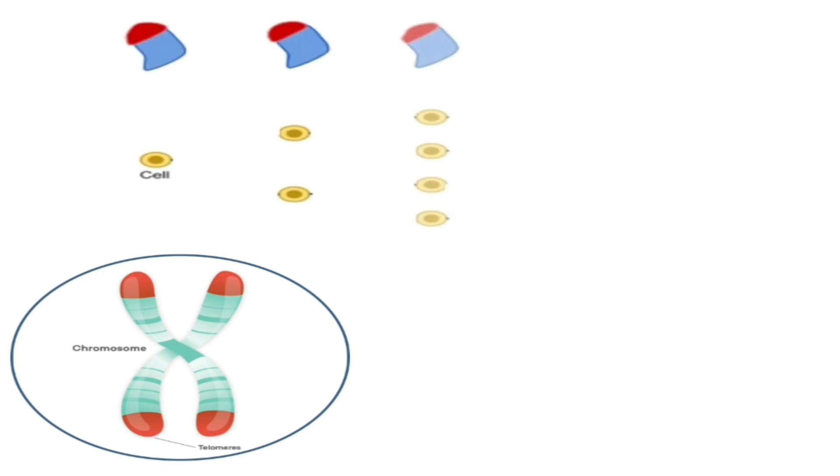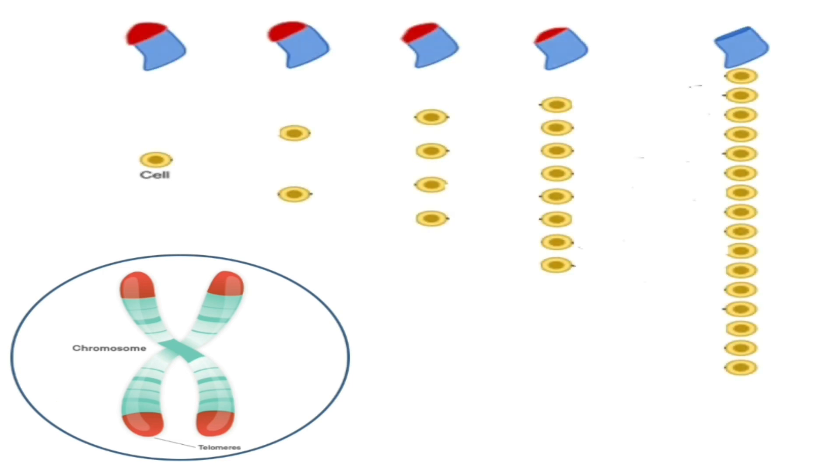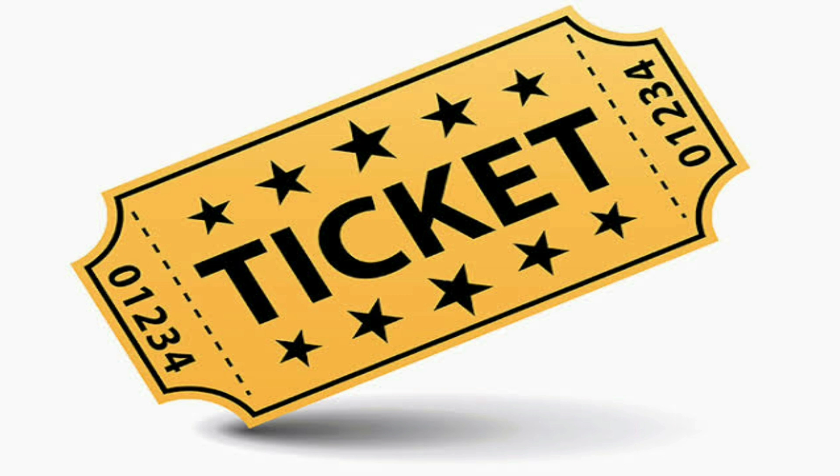At each time the cell divides, a piece of this telomere will be cut until the whole telomere is cut, and thus the cell becomes senescent with no way to divide anymore. For simplification, imagine that the telomere is like a group of tickets the normal cell possesses. Once the cell wants to divide, it consumes one of these tickets, until all tickets are finished — then the cell becomes senescent and no more divisions will happen.